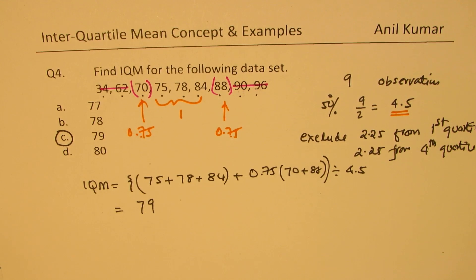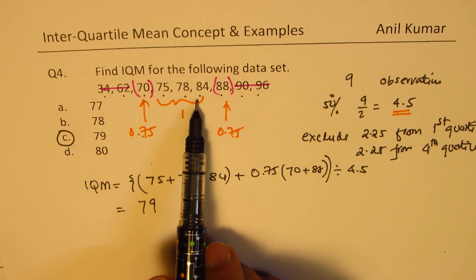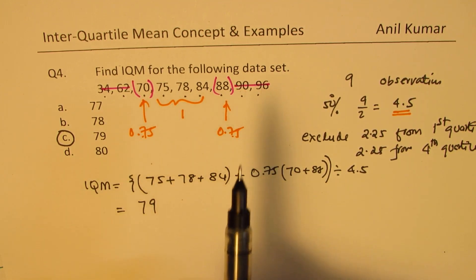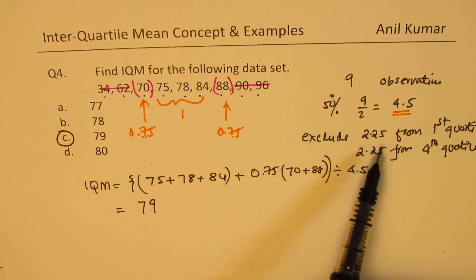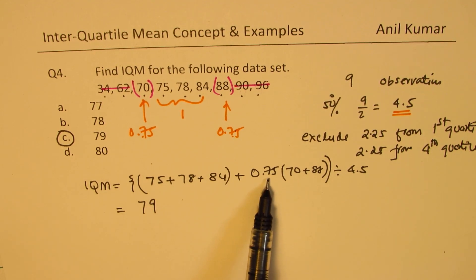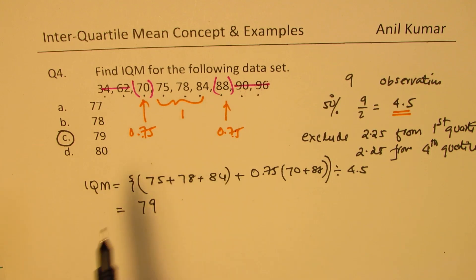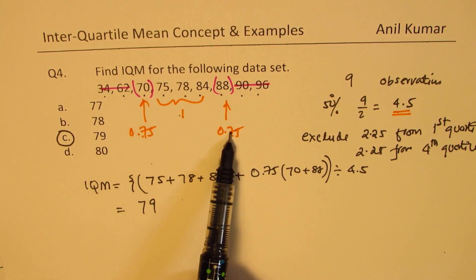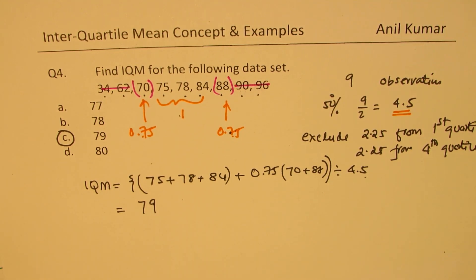I hope it is absolutely clear how to calculate interquartile mean. There are formulas using sigma notation, but that can be confusing. The key idea is: work with 50% of the observation values, exclude 25% on either side. If the count is not a multiple of four, apply weights — 75% for boundary terms, 100% for middle terms — and divide by the total weight (50% of n). Feel free to comment and subscribe. Thanks for watching!